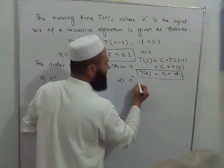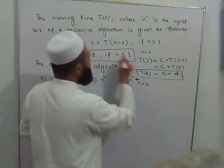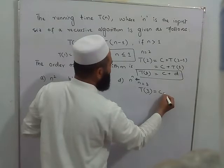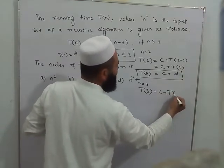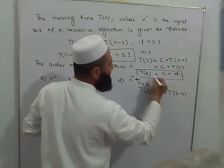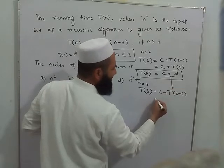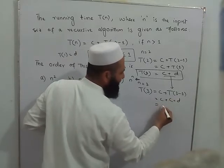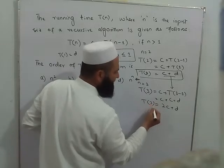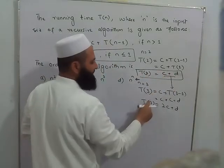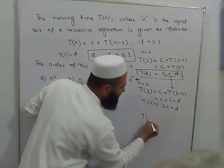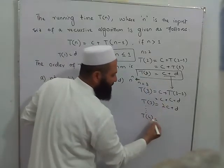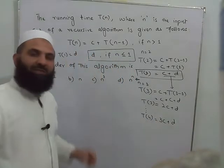N ki value 3 ke liye, for n equal to 3, T of 3 equals c plus T of 3 minus 1, that is T of 2. T of 2 ki value already drive kar li: c plus d. T of 2 ki jagah c plus d rakhte hain to T of 3 equals 2c plus d. Aur 4 ke liye aap guess kar sakte ki 3c plus d hogi.